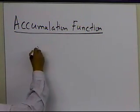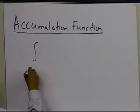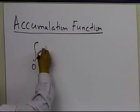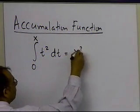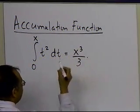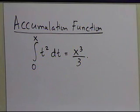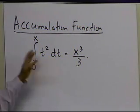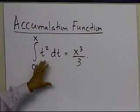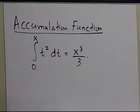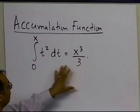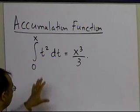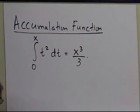Let's take an example. We're going to show that if you integrate t squared from 0 to x, you get x cubed divided by 3. You've seen these equations in tables of integrals, and this might be one of those integrals. But how do we really go from here to there? That's what we're going to show with the accumulation function example.